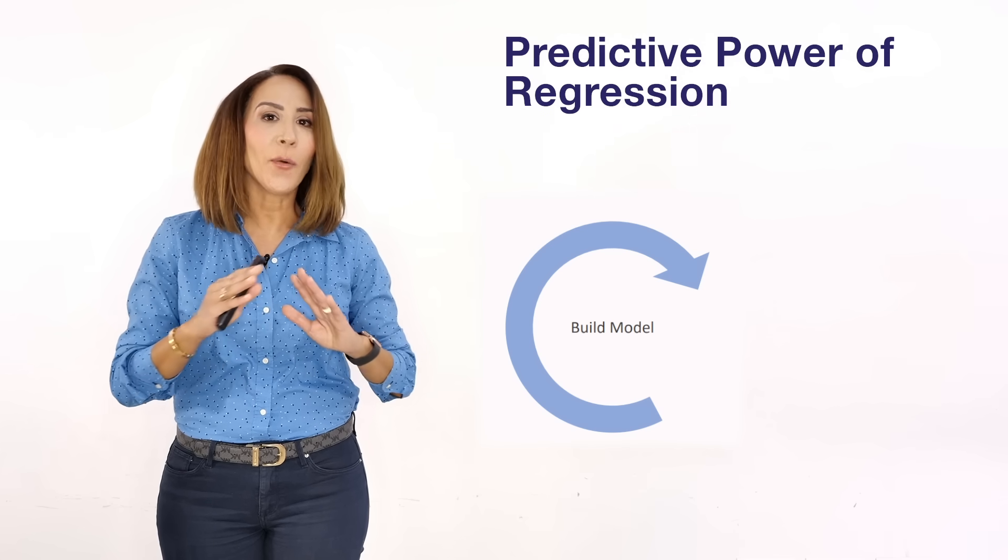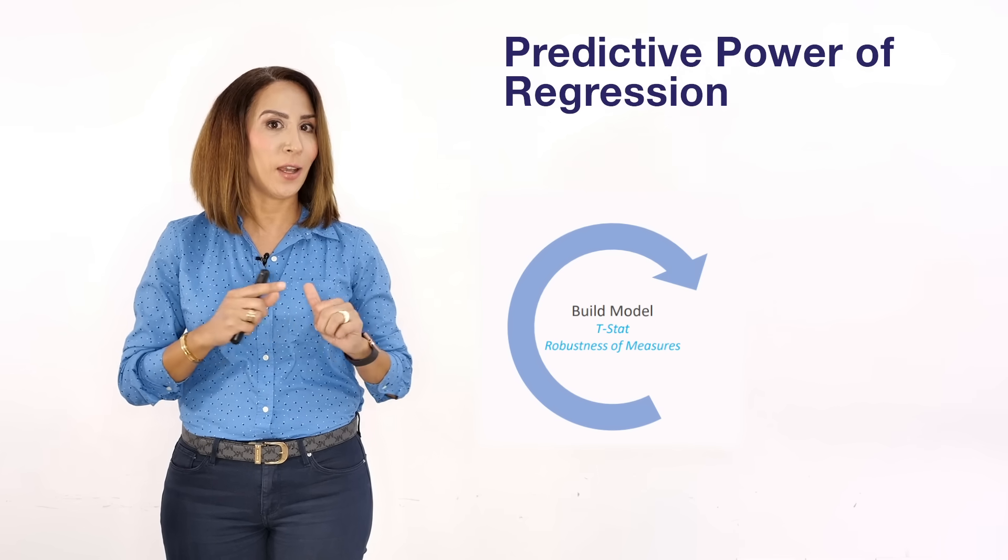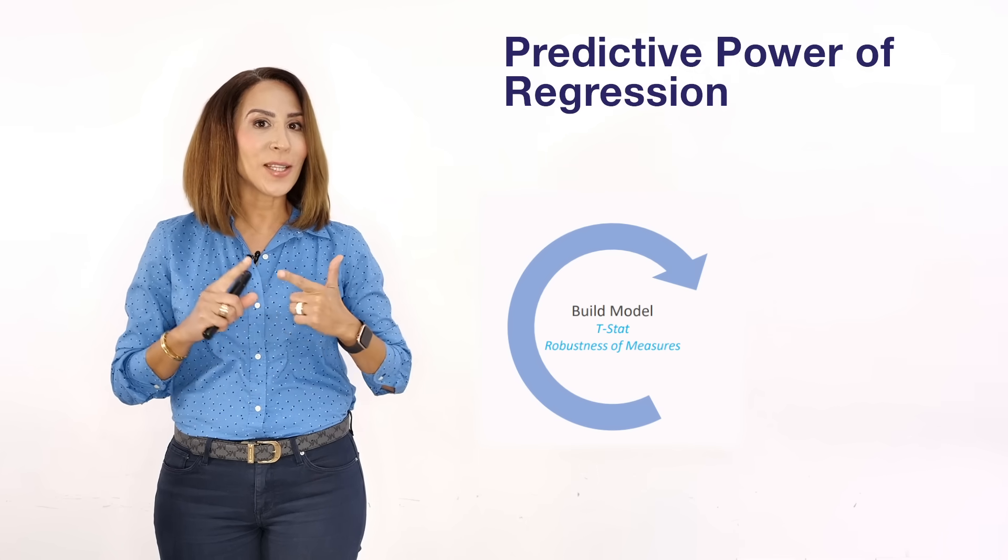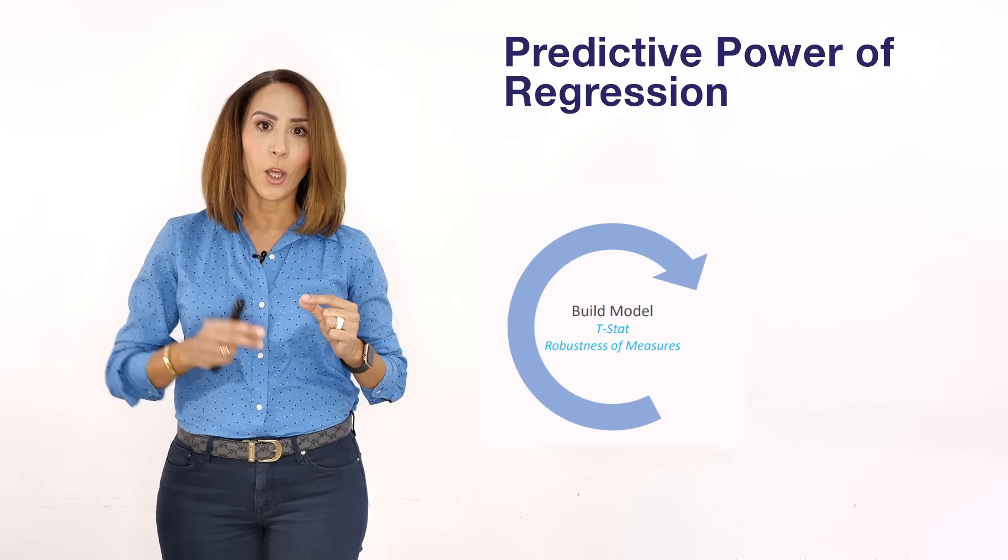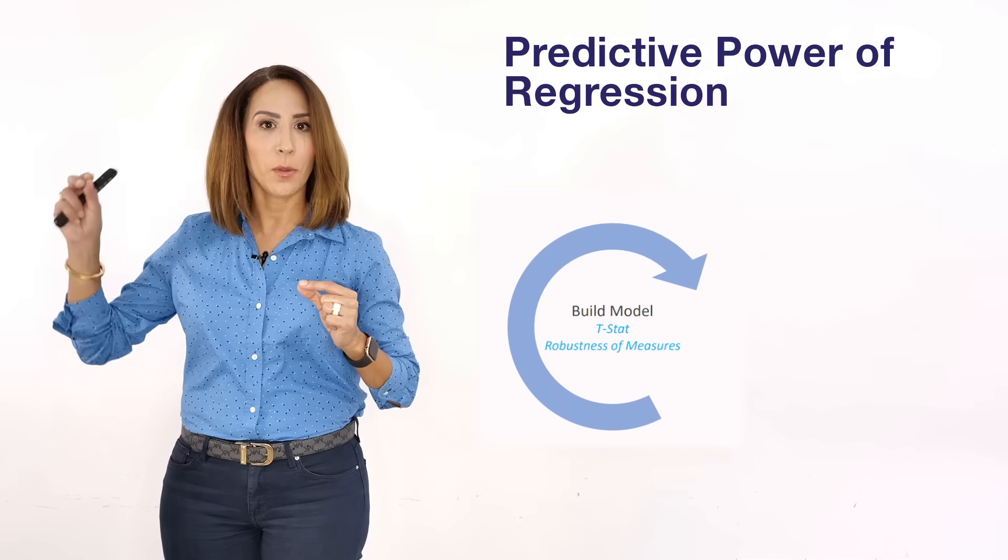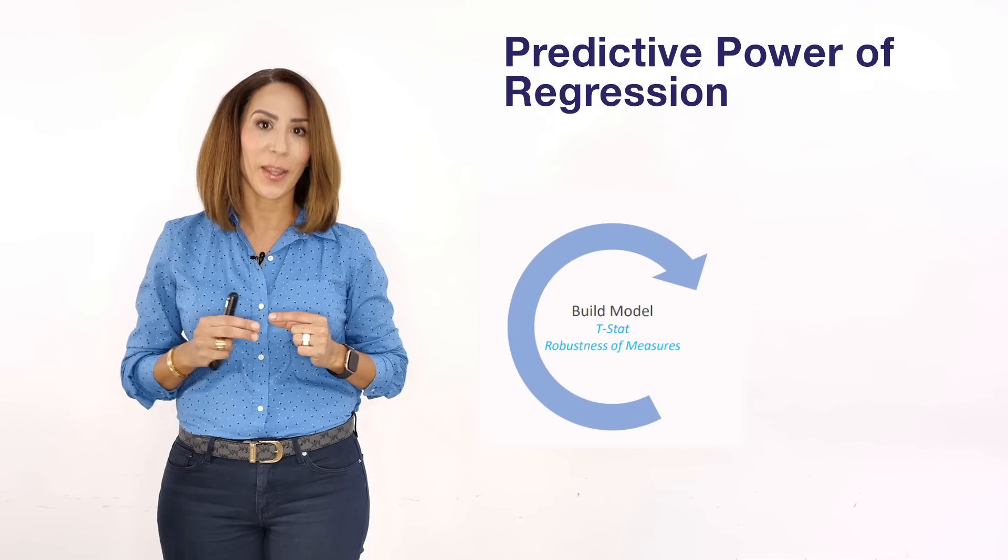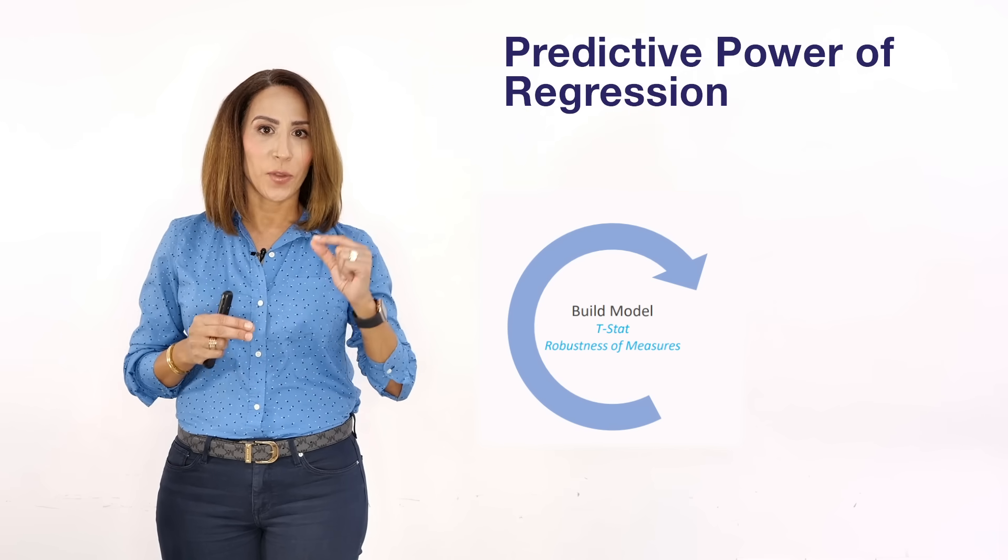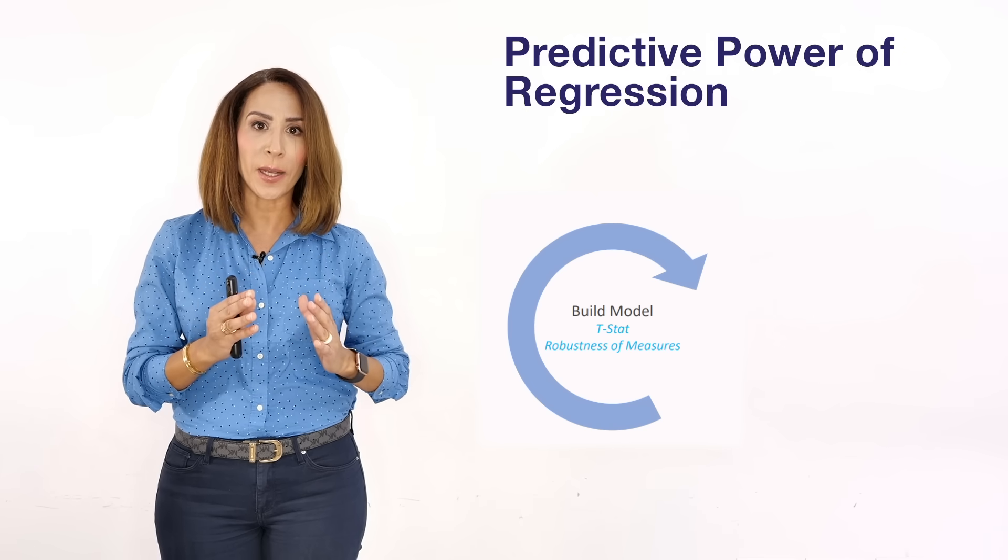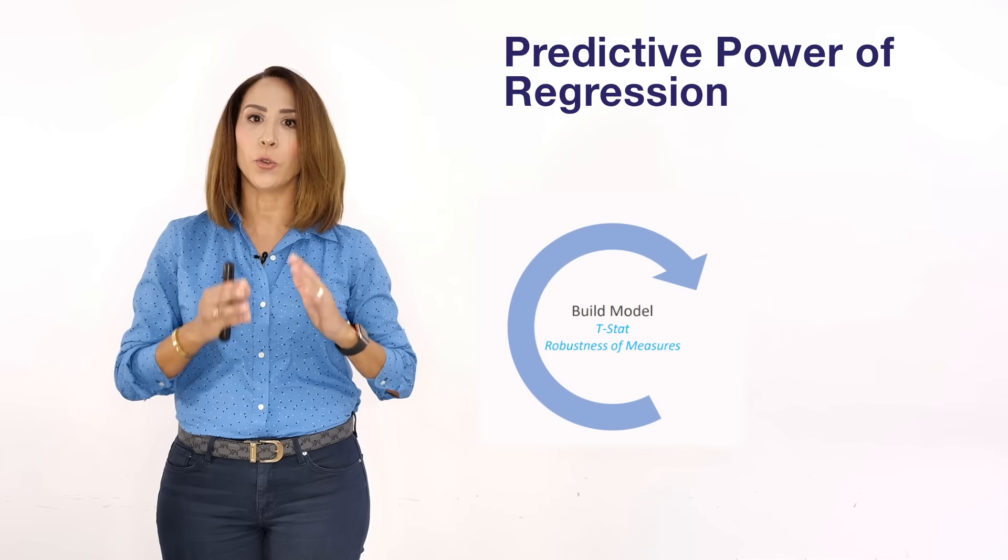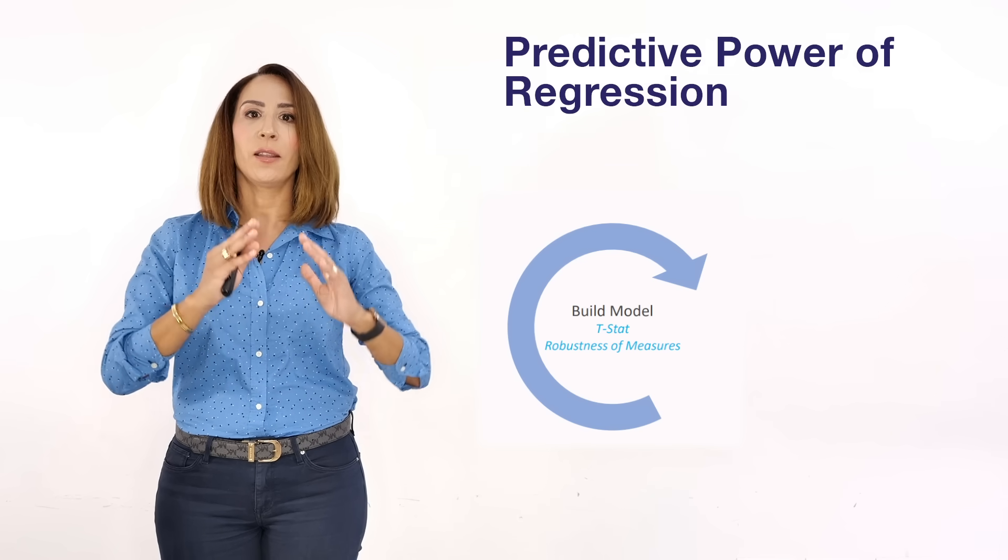Needless to say how important for you to look at the level of your t-stats, the robustness of your measures, because if you do not have a robust model to start with, the results that you will get from the prediction will be wrong and misleading. That's why the first step is to ensure that the model presents high robustness which means that your t-stats and your p-value are at their best.